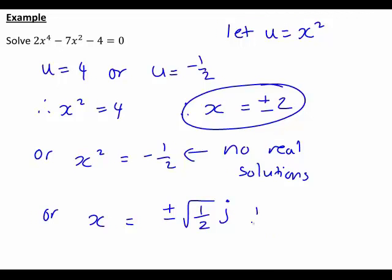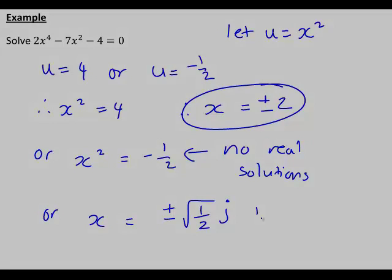But the main things to note here are that because our original equation was all even powers of x, namely x to the 4, x squared, and a constant, it was convenient to let u equal x squared so that we could rewrite this as a quadratic. We then just need to make sure at the end that we remember that u was x squared to go back to get our solutions for x.